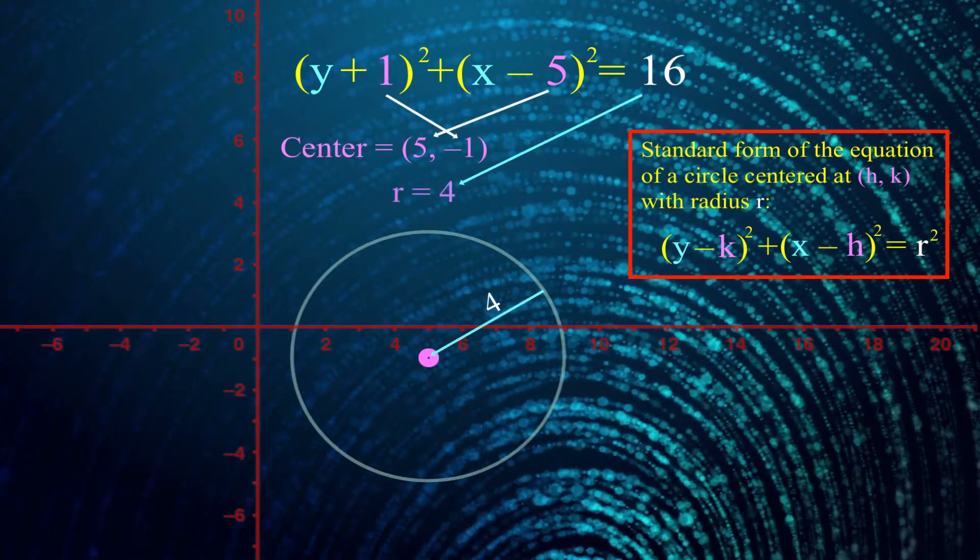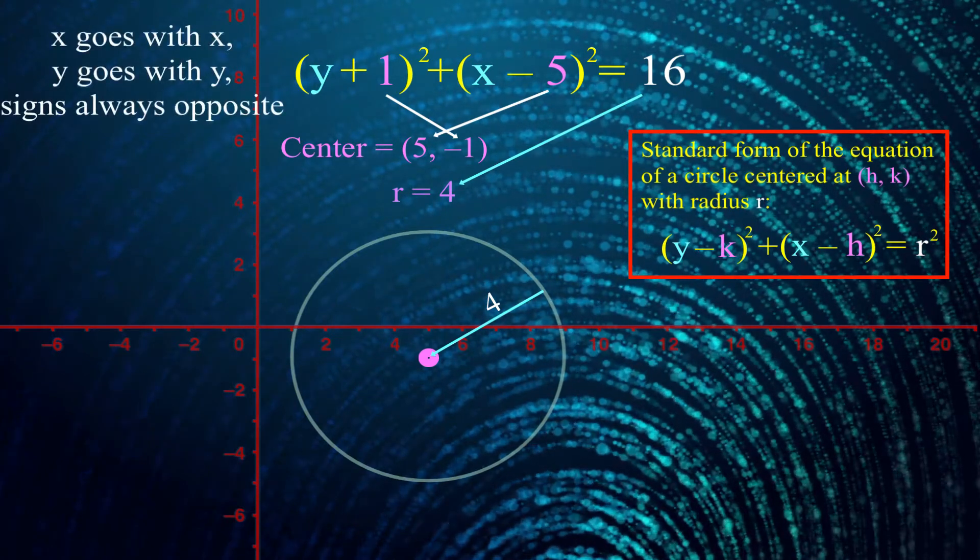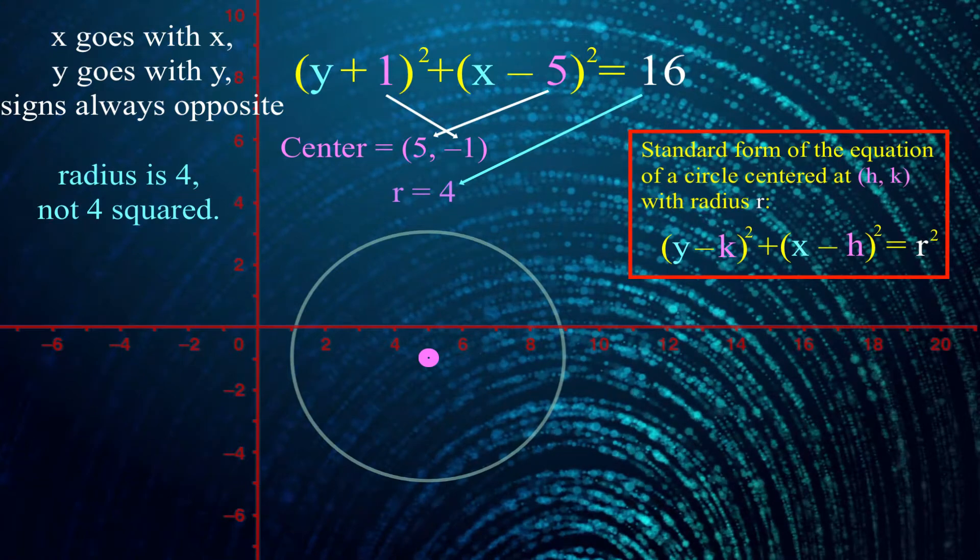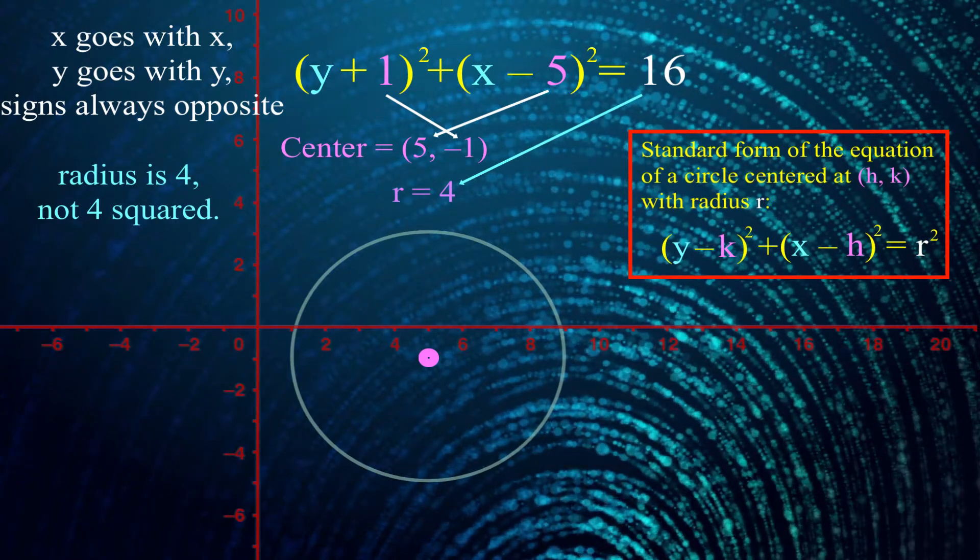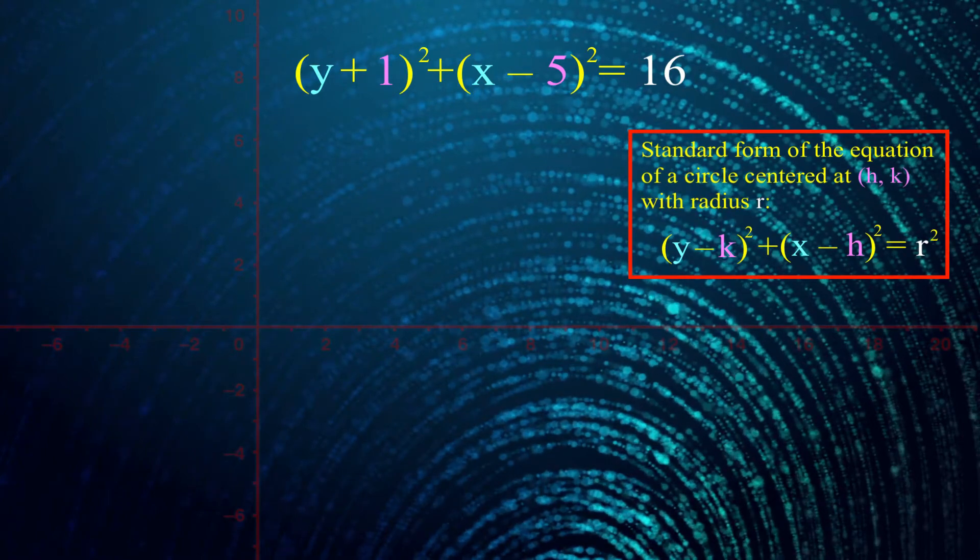And yeah, there's a couple little sticking points. I have to make sure to get the signs correct on the coordinates of the center, and make sure to report the radius and not the radius squared. But those were all the issues for the second video. I kind of feel like I'm missing something. How can you make this harder? And what's any of it have to do with the third video and completing the square?